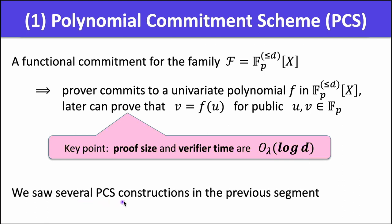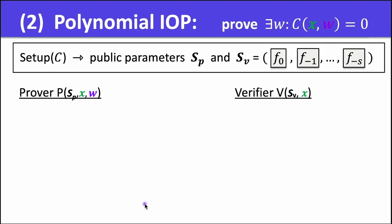In our presentation today we're going to look at a particular instance of this paradigm where the functional commitment scheme is a polynomial commitment scheme, or PCS. If we're committing to univariate polynomials, the corresponding interactive oracle proof is a polynomial interactive oracle proof, or poly IOP, which is designed to work with a PCS. We combine these two together and end up with a SNARK.